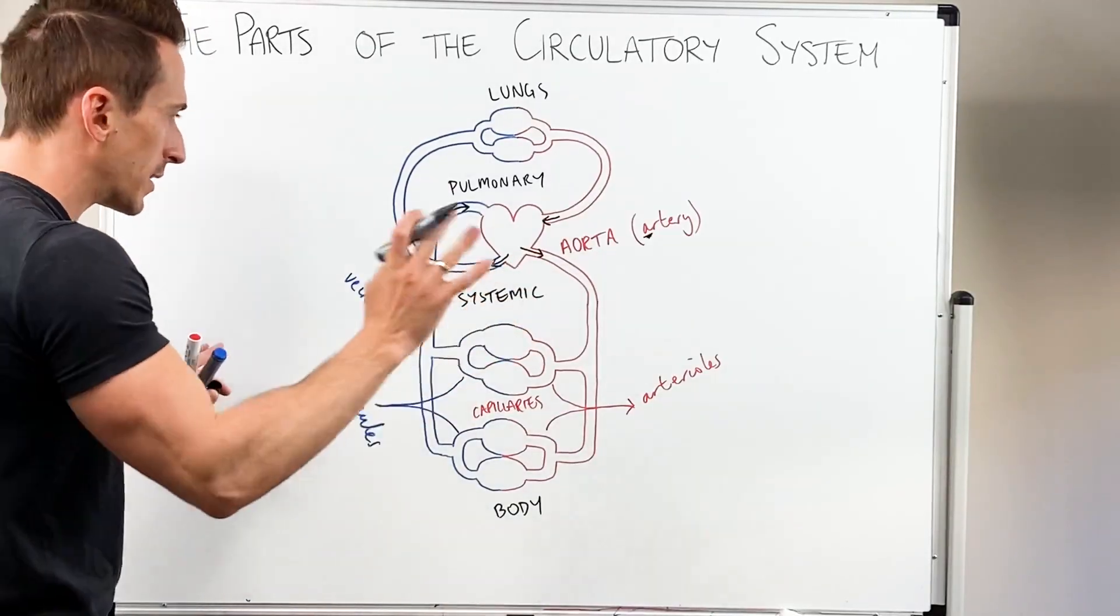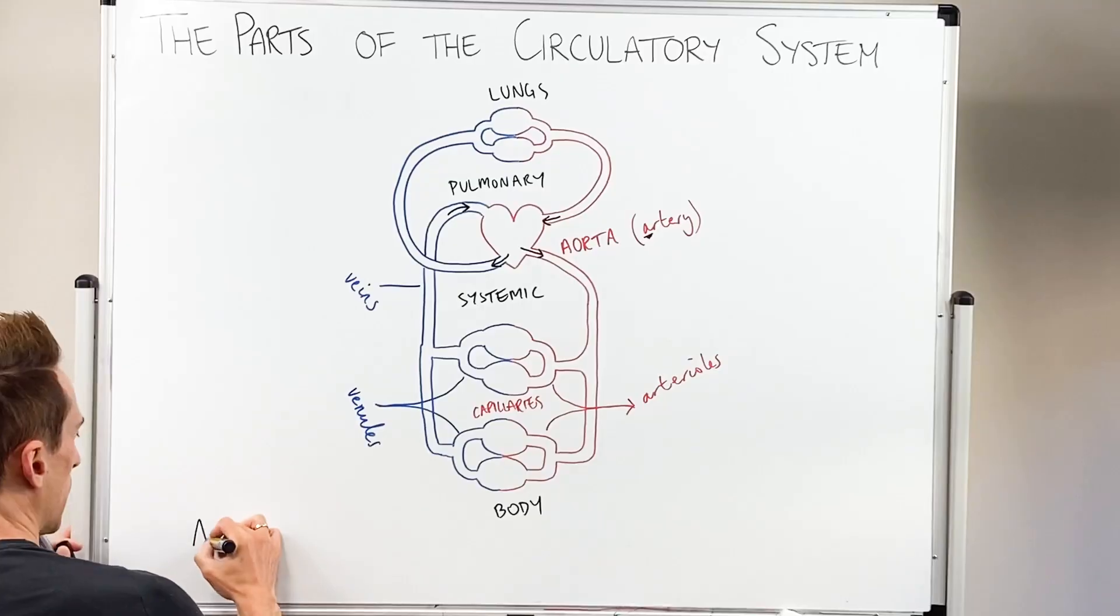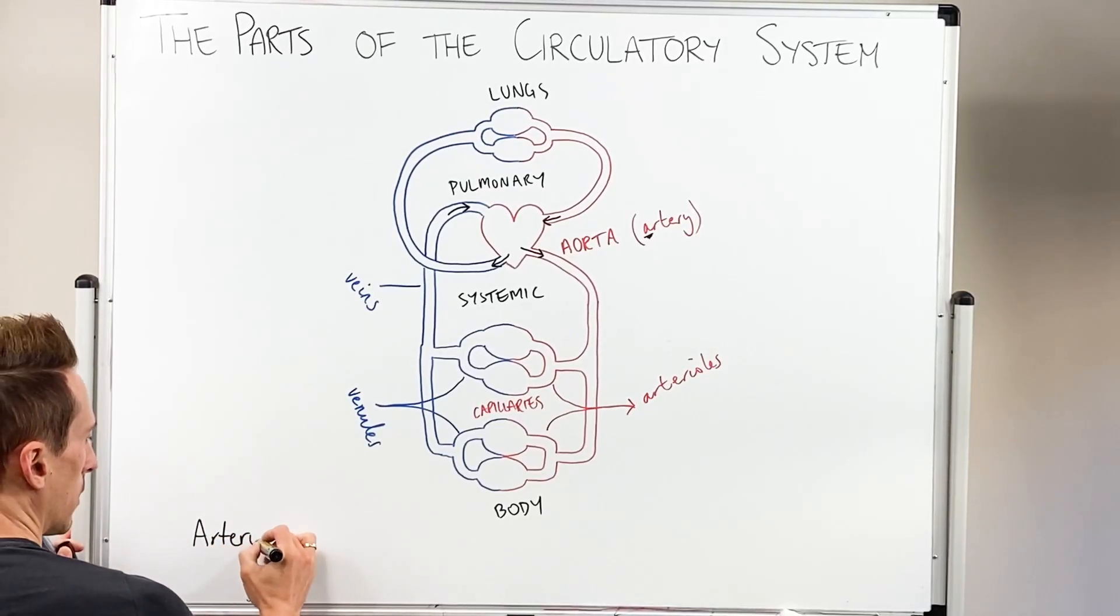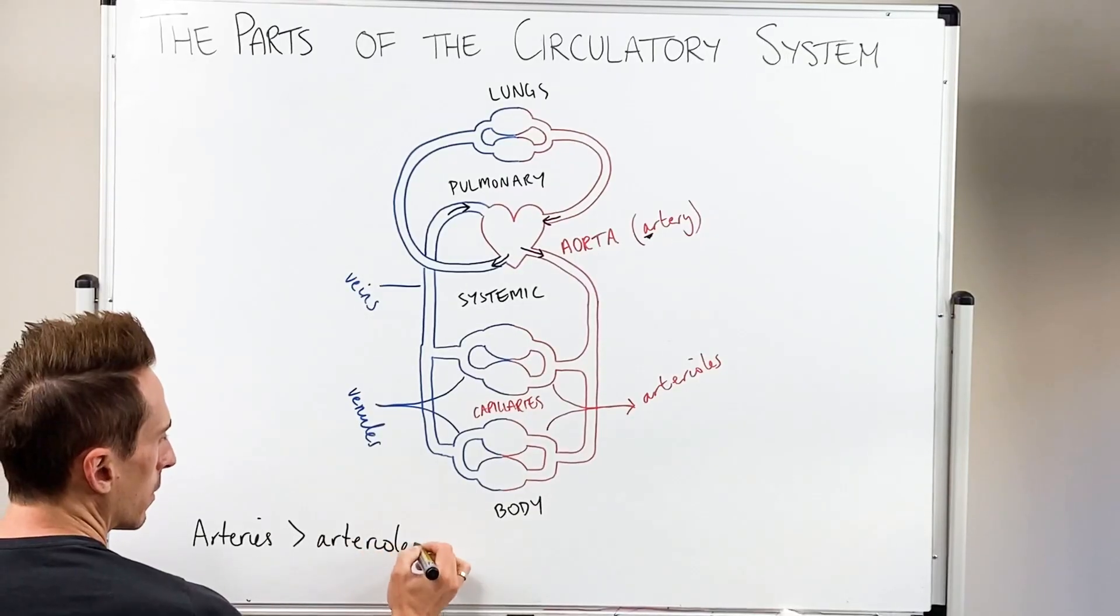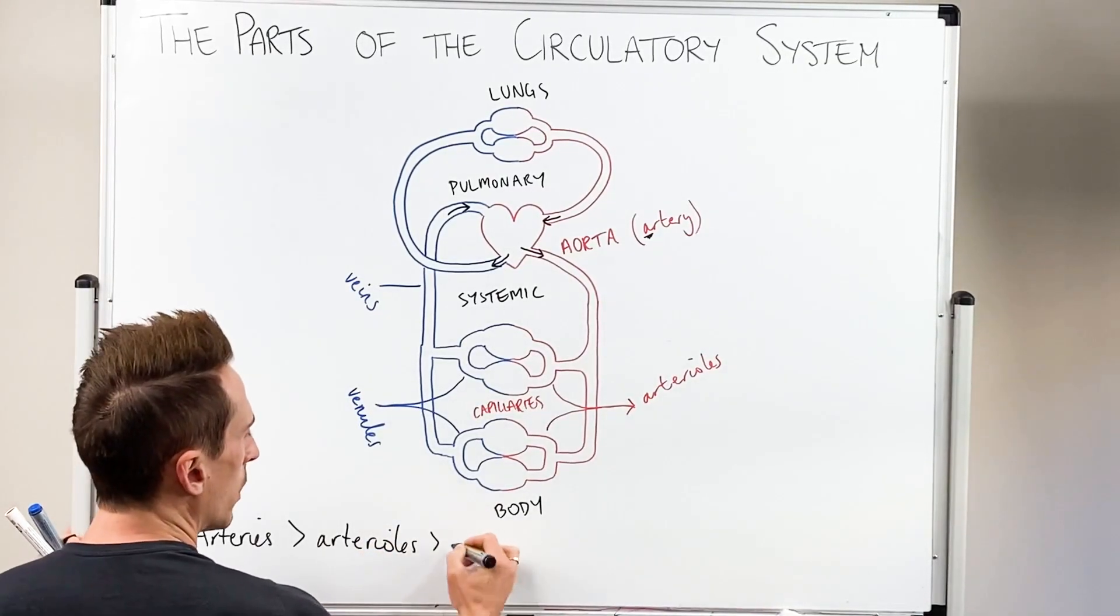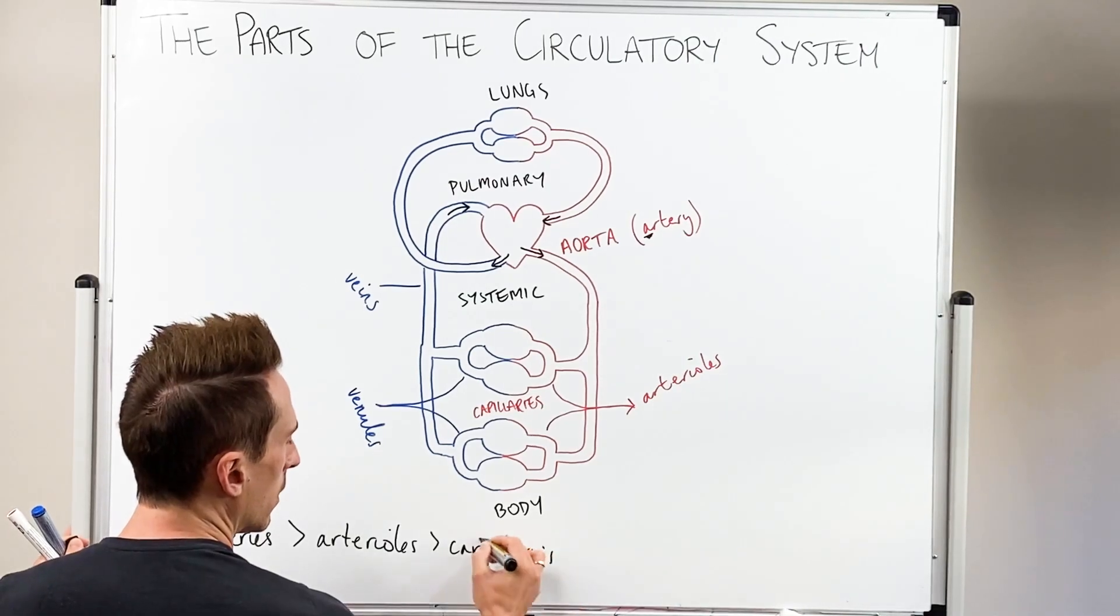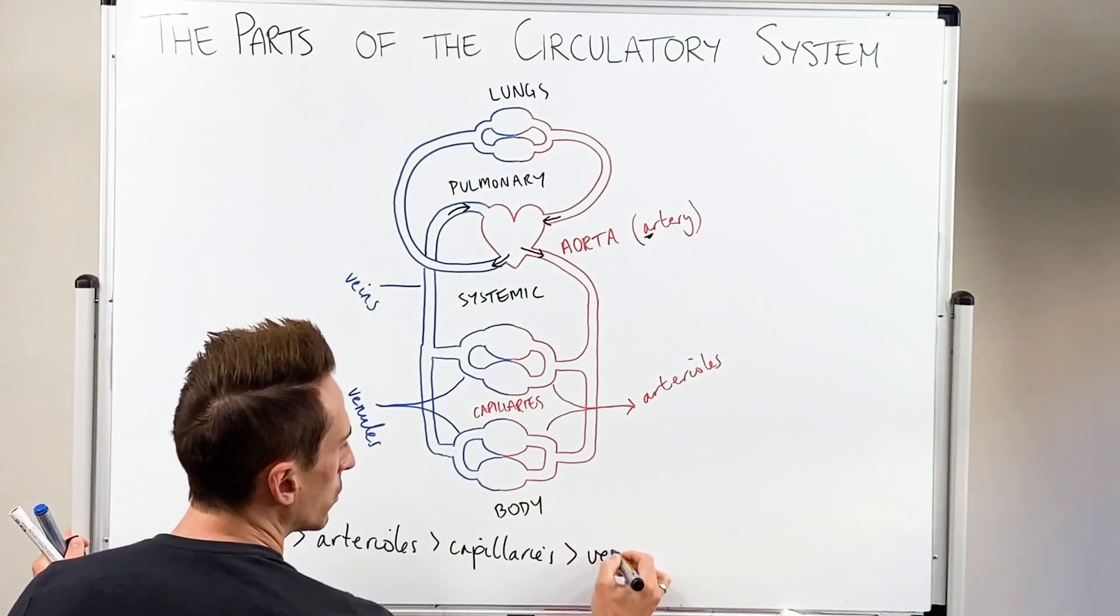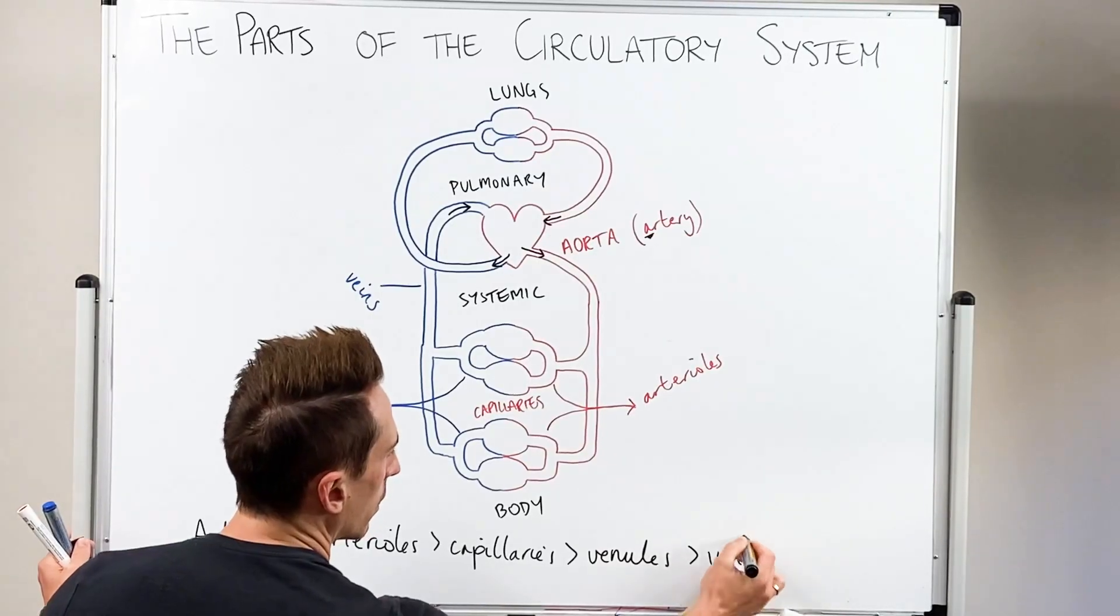Now, what this means is simply this. When we look at the flow, it is arteries, then it goes to arterioles, then it goes to capillaries, then it goes to venules, and then it goes to veins.